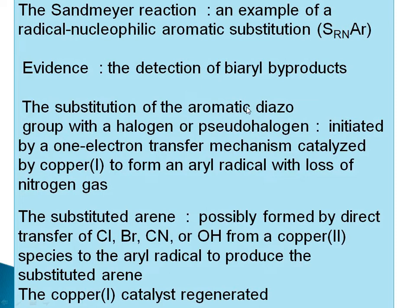In summary: substitution of the aromatic diazo group with halogen or pseudohalogen is initiated by a one-electron transfer (SET) mechanism, catalyzed by copper(I), to form an aryl radical with loss of nitrogen gas. The aryl radical then reacts with the copper(II) species to produce the substituted arene (Cl, Br, CN, OH), while copper(II) is reduced back to copper(I) catalyst.